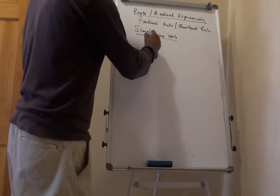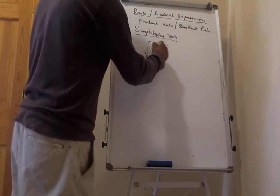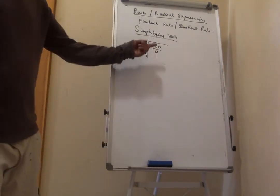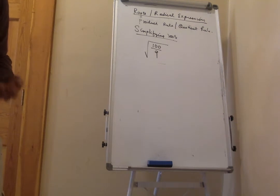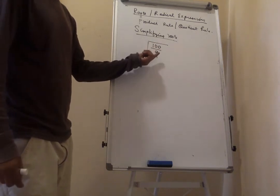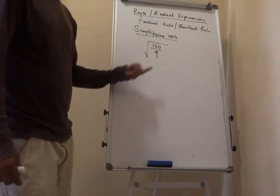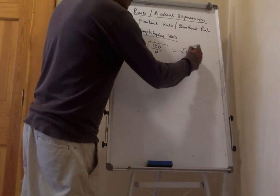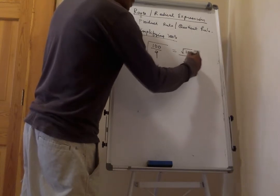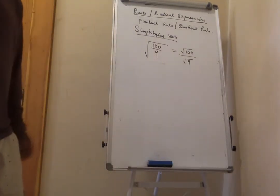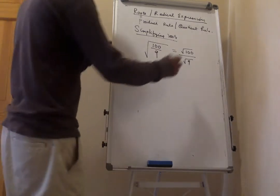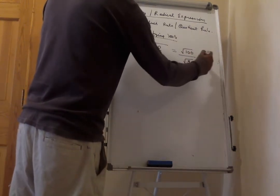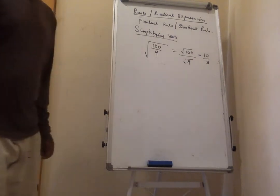Using the quotient rule: simplify the square root of 100 over 9. Rather than dividing 100 by 9 directly, break it into the square root of 100 over the square root of 9. This makes it easier — the square root of 100 is 10 and the square root of 9 is 3, giving 10 over 3.